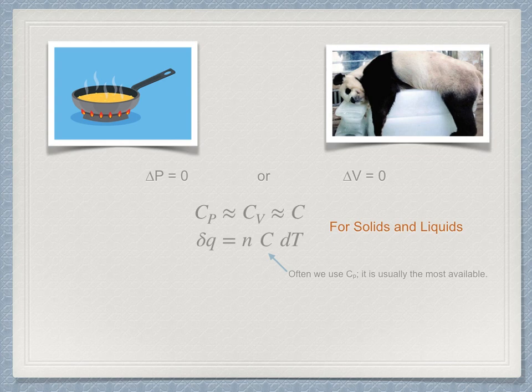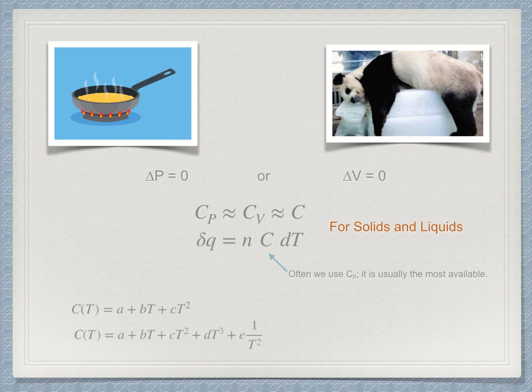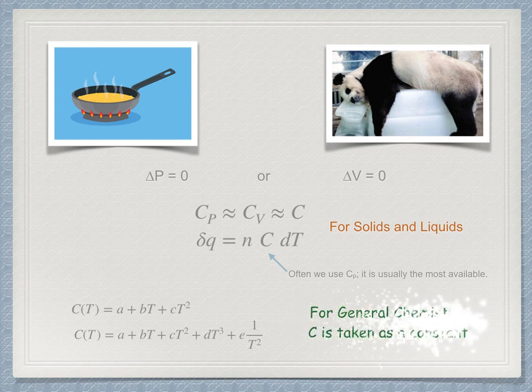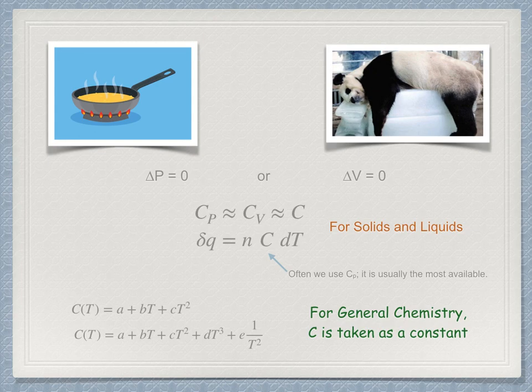The heat capacity values are rather complex expressions of temperature. They are sometimes represented as a second-order polynomial and sometimes as even higher-order functions. When used, it just complicates the integration. It's not difficult mathematically, it just takes a bit more time. In general chemistry, however, we usually simplify this by considering the heat capacity to just be a constant. And this is what we will do here.